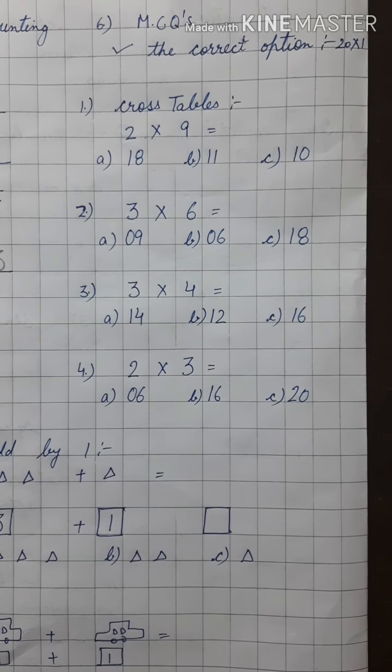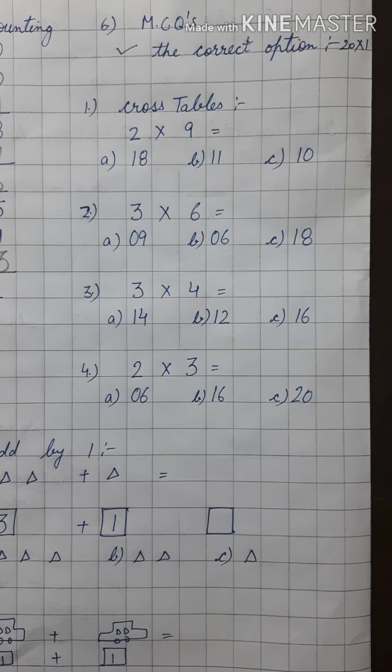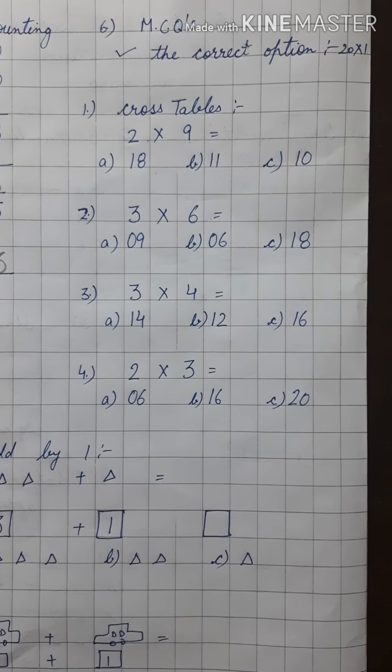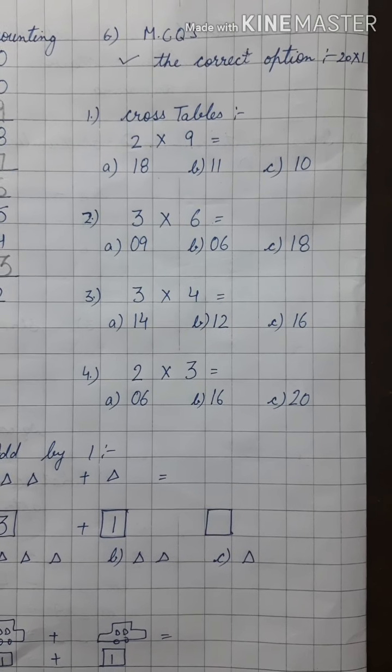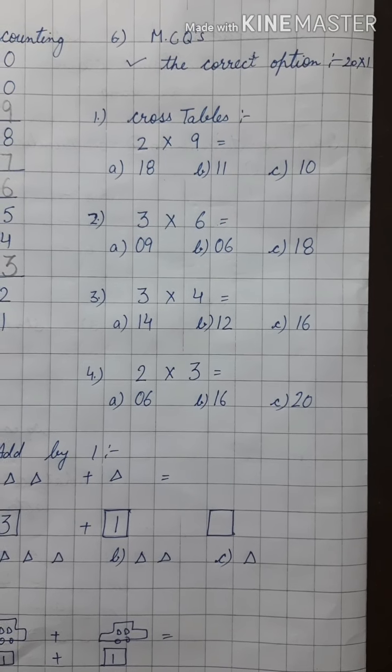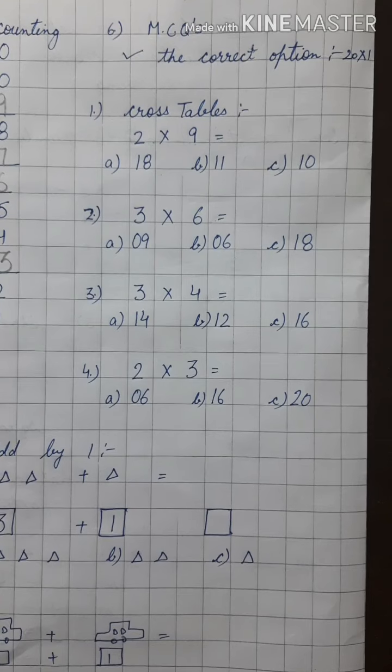After attempting subjective type question paper, you have to attempt objective type question paper also. That will be of 20 marks. You have to tick the correct option. That will be in MCQ form.